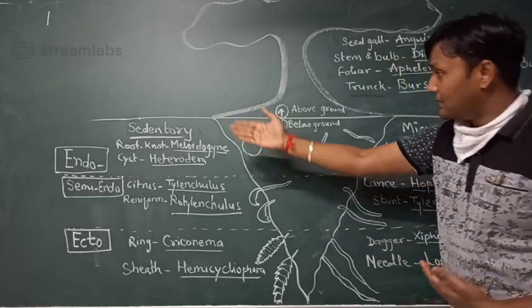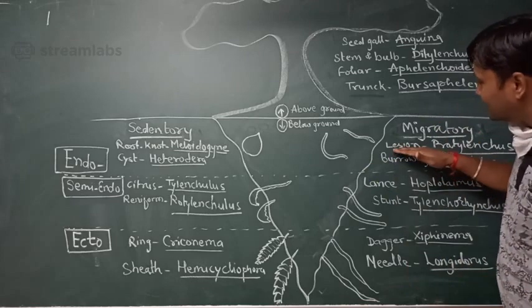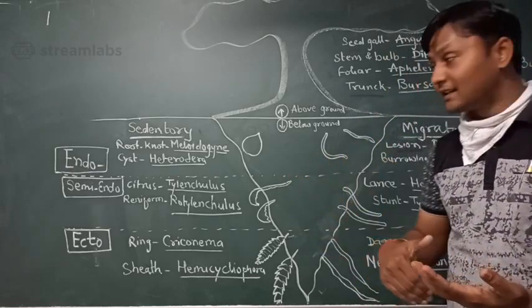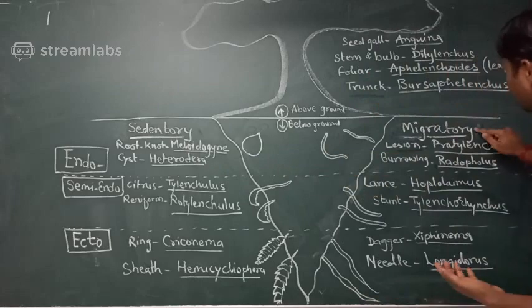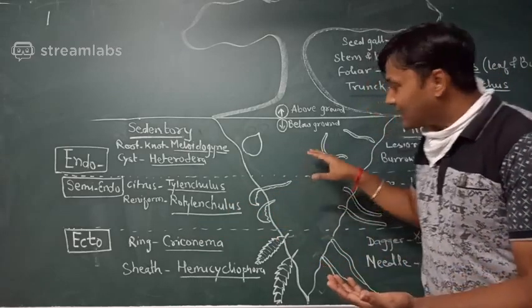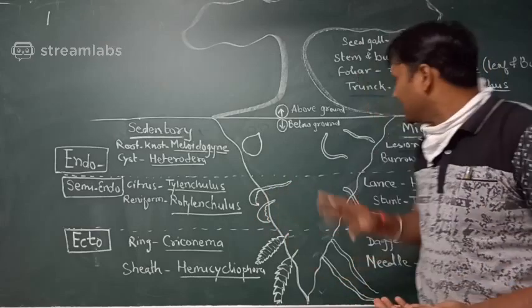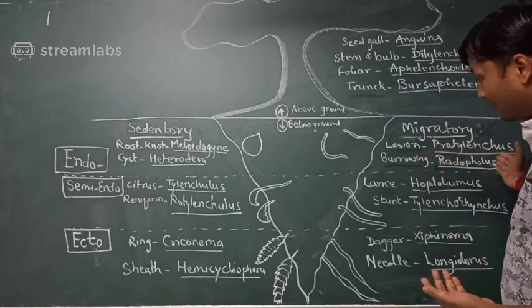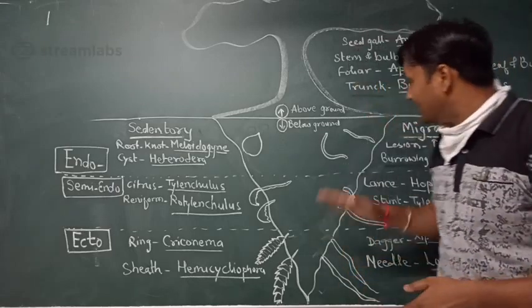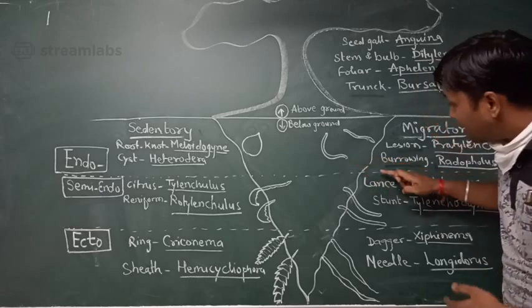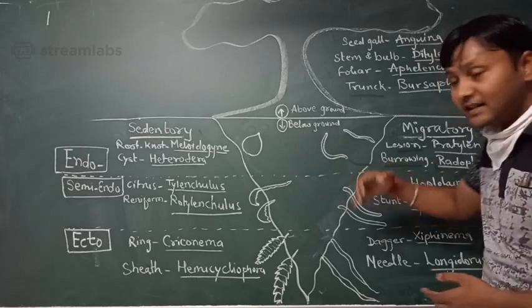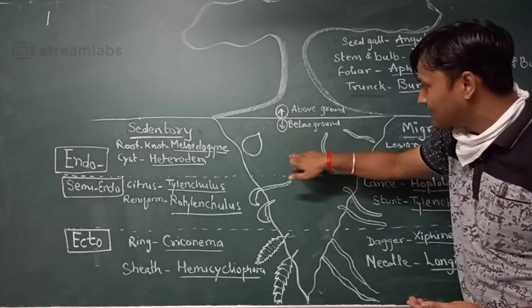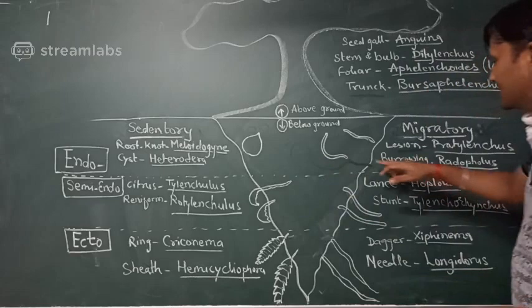Under migratory endoparasitic nematodes, there are two good examples. First, lesion nematodes, Pratylenchus, which create lesions on roots as they move through plant tissue. Second, burrowing nematodes, Radopholus similis, which cause toppling disease in banana by creating tunnels within the root tissue — hence the name burrowing nematodes.